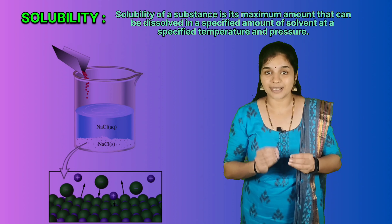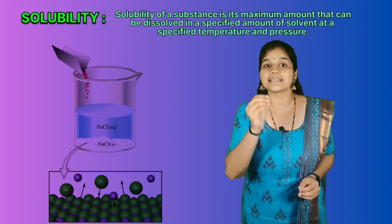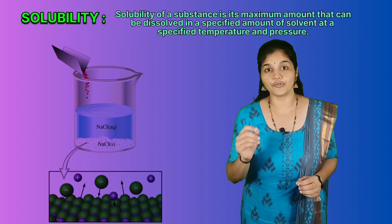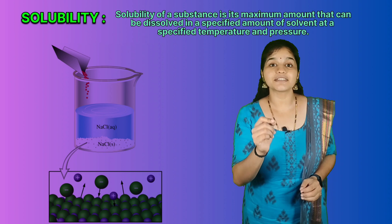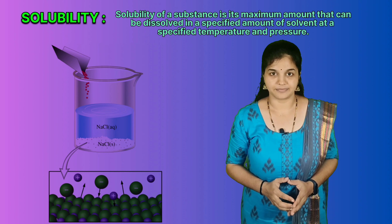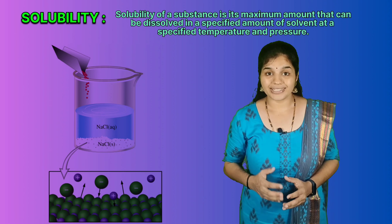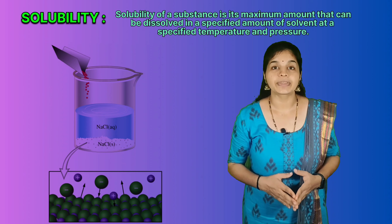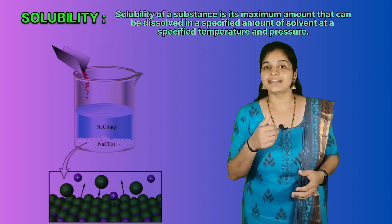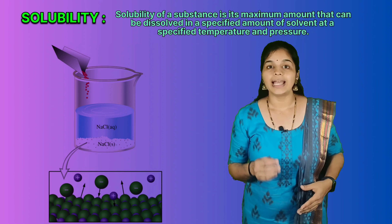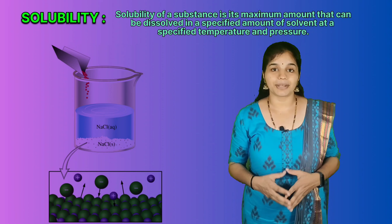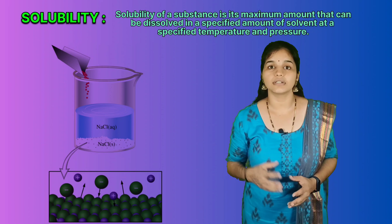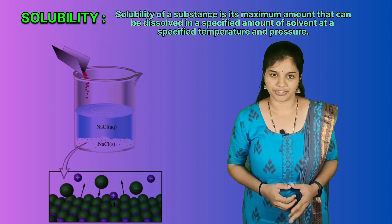So, solubility of a substance is its maximum amount that can be dissolved in a specified amount of solvent at a specified temperature. Solubility depends upon the nature of solute and solvent. It also depends on temperature as well as pressure. Let us see how temperature and pressure affect the solution of a solid or a gas in liquid.